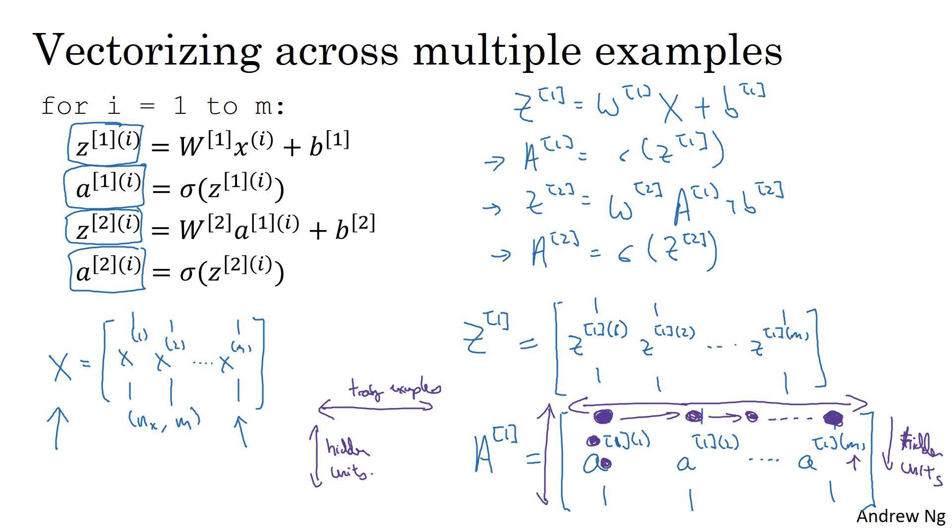And a similar intuition holds true for the matrix Z as well, as well as for X, where horizontally corresponds to different training examples, and vertically it corresponds to different features, different input features, which are really different nodes in the input layer of the neural network.